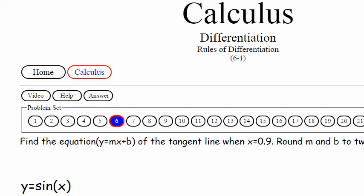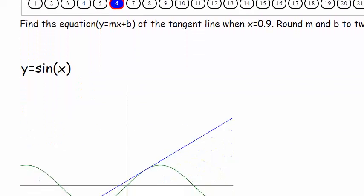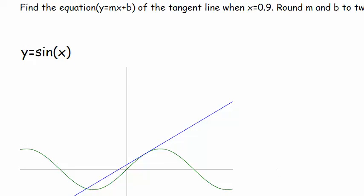We got a picture to look at here. I'm adding pictures. Let's look at this problem. It says find the equation y equals mx plus b of the tangent line. Find the equation of the tangent line in slope-intercept form when x is equal to 0.9.